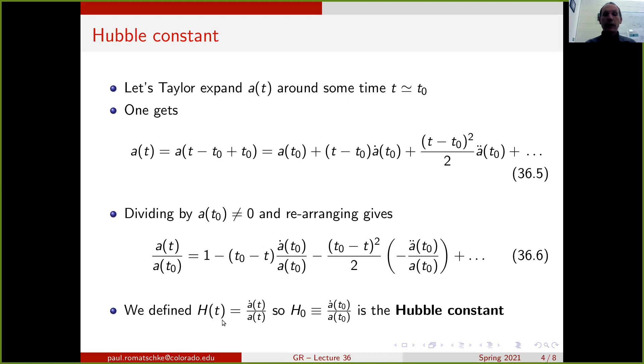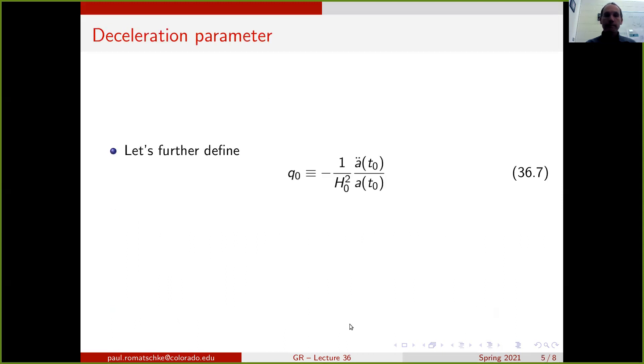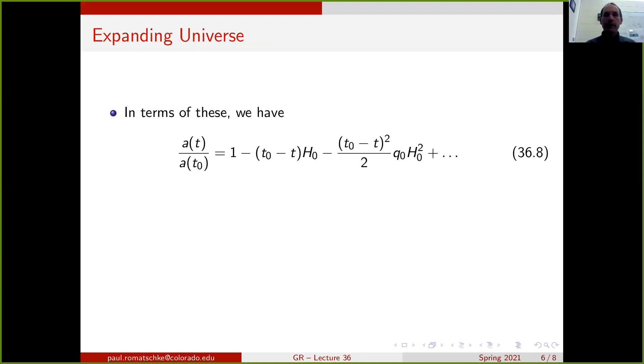We said that we have this function h(t), which is defined as the ratio of a dot over a, and this is precisely this ratio that appears here evaluated at t0. So we define h at time t0 as h0, and we call this coefficient the Hubble constant. If we further also denote the second derivative by a specific parameter, we introduce the second derivative being parameterized by q0, and we call q0 the deceleration parameter. We have both the linear and the quadratic term of the Taylor expansion captured by these two parameters.